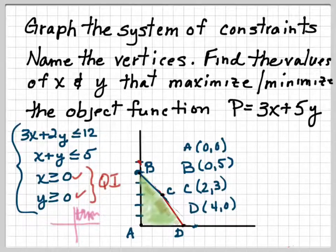Now C is the hardest one, and 2, 3 is pretty easy to see because it is right on the graph. But you might have to take the 3x plus 2y is less than 12 and x plus y is less than 5 and solve those simultaneously to verify that that point is 2, 3.